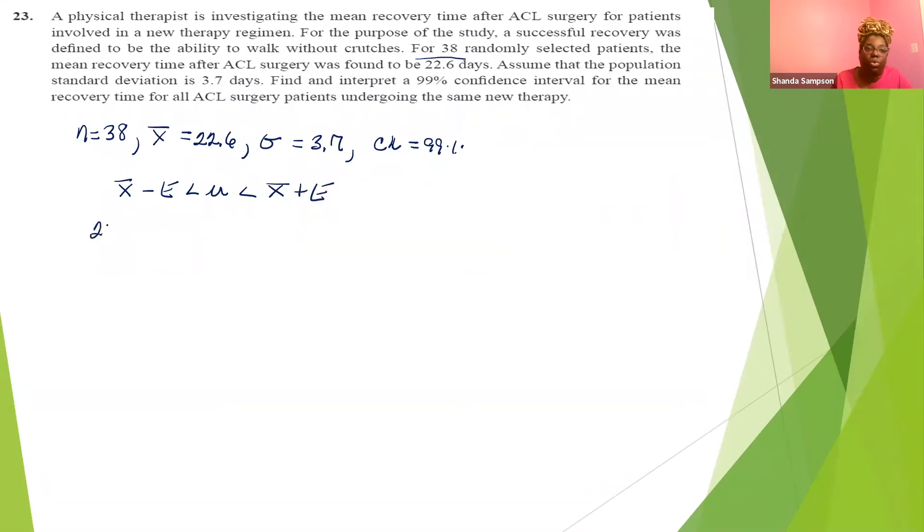Find and interpret a 99% confidence interval for the mean. x bar minus E is less than mu is less than x bar plus E. We know what our x bar is, 22.6 minus E, and then that's 22.6 plus E. Now we need to find our margin of error, which is Z alpha over two times sigma over the square root of n. I know that's 0.01, right? Because it's 1 minus 0.99. And then I know that I'm looking for Z of 0.005.